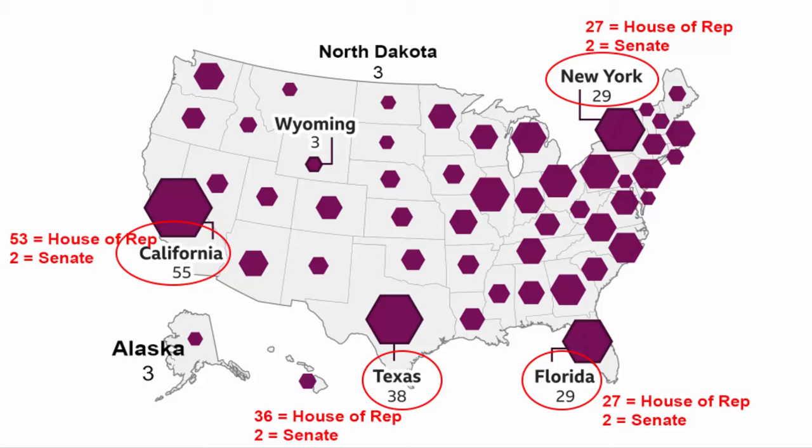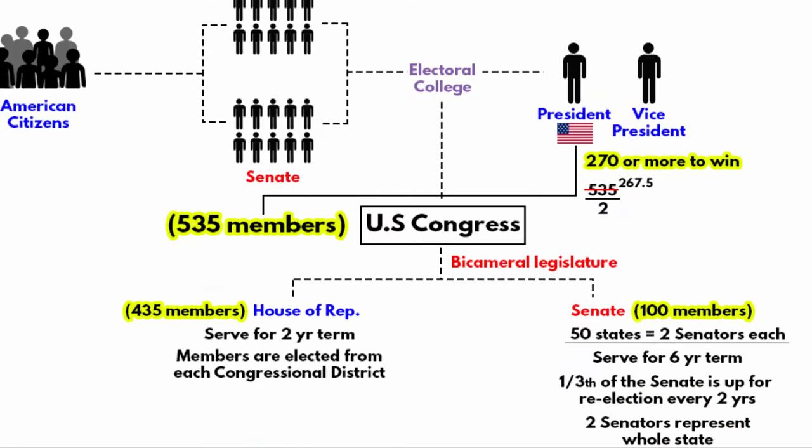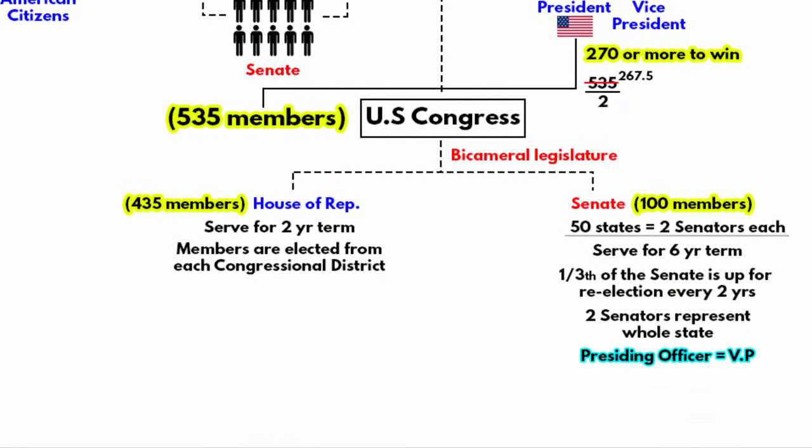This is why presidential candidates target only specific swing states — states where the vote could go either way — rather than trying to win over as many voters as possible across the country. Even then, every state they win gets them closer to the 270 Electoral College votes they need. The presiding officer of the Senate chamber is the Vice President of the United States, and the presiding officer of the House of Representatives is the Speaker of the House, who is second in line after the Vice President.